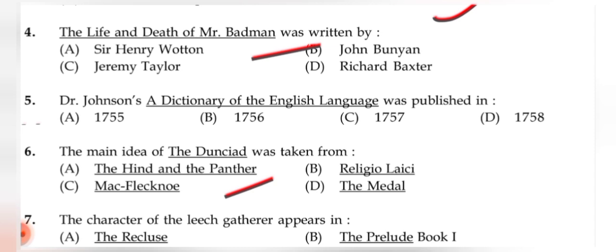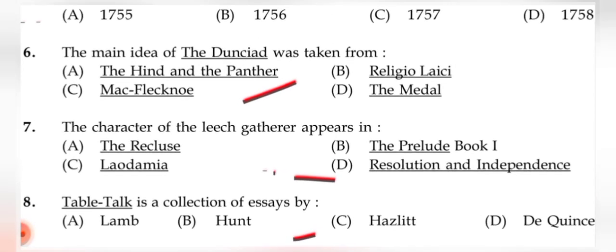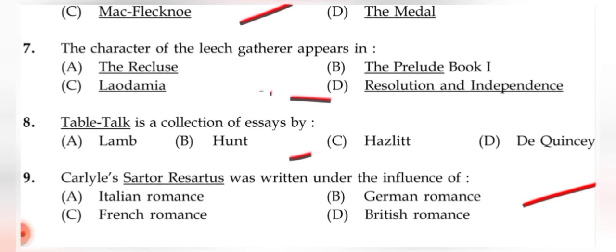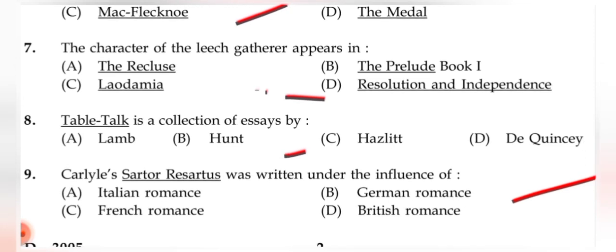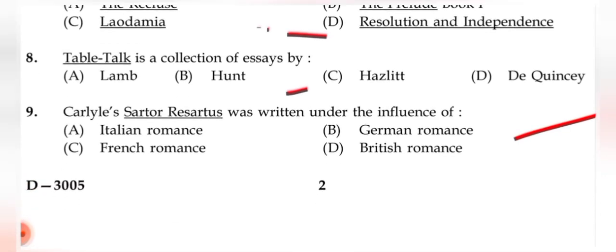Question 7: The character of the leech-gatherer appears in (D) 'Resolution and Independence.' Question 8: 'Table-Talk' is a collection of essays by (C) Hazlitt — whose full name was William Hazlitt. Question 9: Carlyle's 'Sartor Resartus' was written under the influence of (B) German romance.